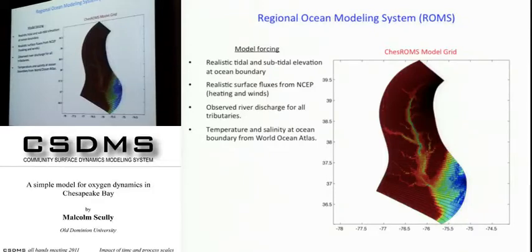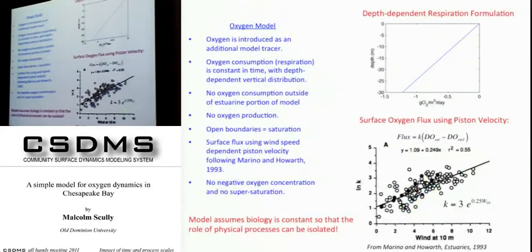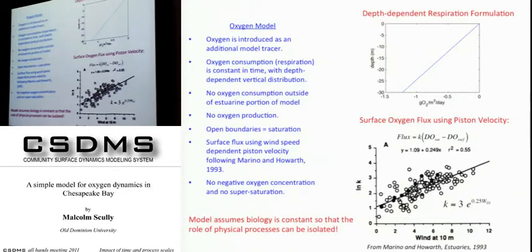I've taken their hydrodynamic forcing and added a very simple way of representing oxygen dynamics. The oxygen model introduces oxygen as an additional model tracer — the model advects and mixes oxygen. I've prescribed a constant consumption of oxygen, representing net respiration, with a depth-dependent vertical distribution: zero at the surface, linearly increasing with depth. It's spatially uniform and time-invariant. There's no oxygen consumption outside the estuarine portion, no net oxygen production, and boundaries are set to saturation based on temperature and salinity.